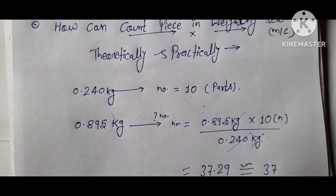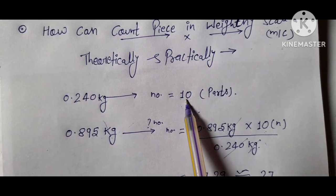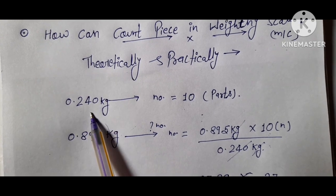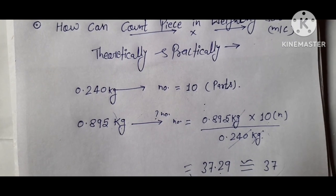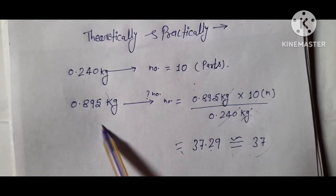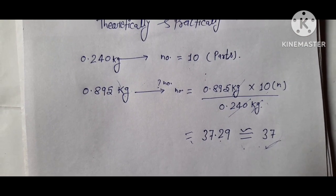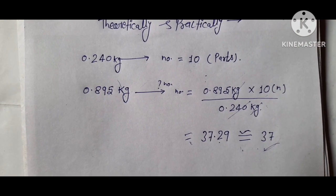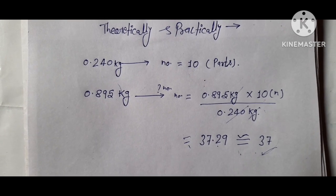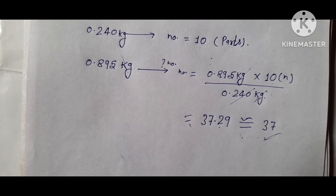Friends, if you use any weighing machine, initially count your parts — the number of parts — and note their sample weight. After that, put all parts on the weighing machine and calculate like this to find out the total number of parts. However, in these theoretical values, some variation will be created because all parts' density are not the same.